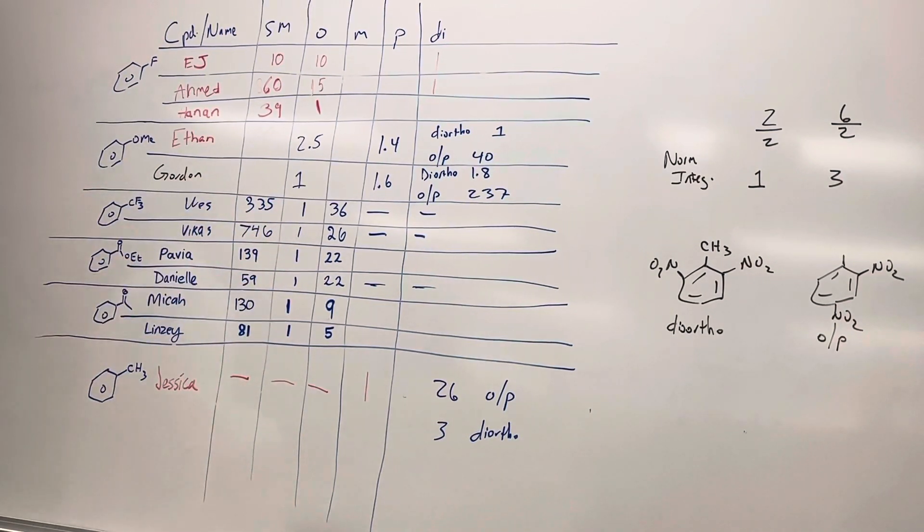So whenever, when we talk about these meta directors, ortho para directors, we're not saying that you're going to get a hundred percent meta, or a hundred percent ortho para, you just have a majority of those. But does anybody have questions on the data here? Is there a reason why most of the deactivators went ortho rather than para? Most, well. Yeah, why don't we see any numbers in the para column? For which one? For all the deactivators.